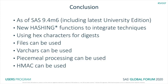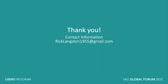In conclusion, be aware that in 9.4 M6 the hashing functions are available, and they use hex character data for the digest being returned. You can work with files, you can work with varchars, and you can process piecemeal as well, as well as HMAC. All of these functionalities are available to you depending on what kind of specifications you may have. It's been my pleasure to speak to you today. Here is my email address — I'll be glad to correspond with you about the subject or others. Thank you very much for your attention.